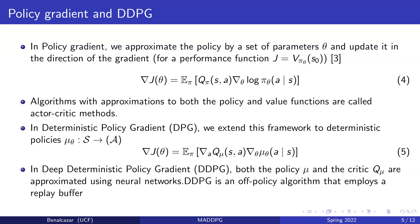In policy gradient, we approximate the policy by a set of parameters theta and update it in the direction of the gradient using different optimization approaches. For a performance function defined as the state-value function, we can show that the gradient is the expected value of the state-action value function times the gradient of the log of the policy. Actor-critic methods use approximations to both the policy and the value functions.